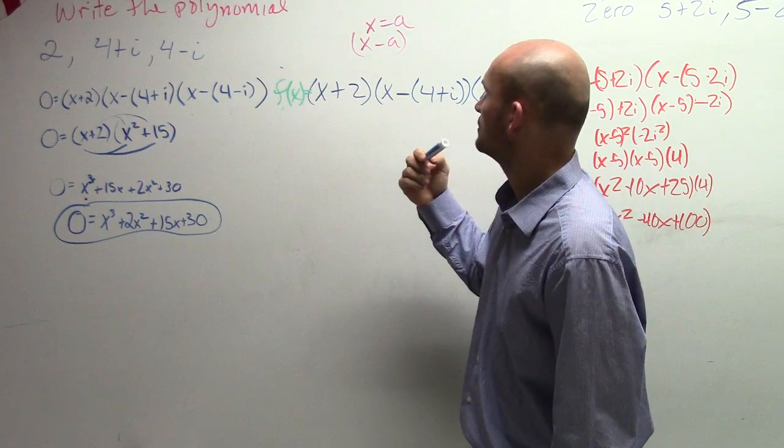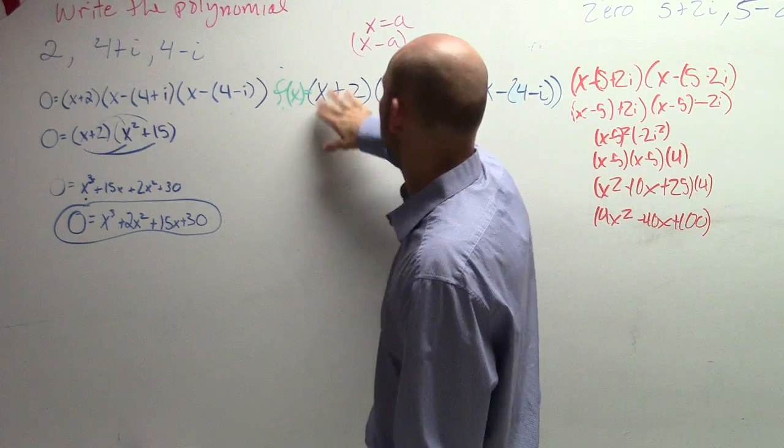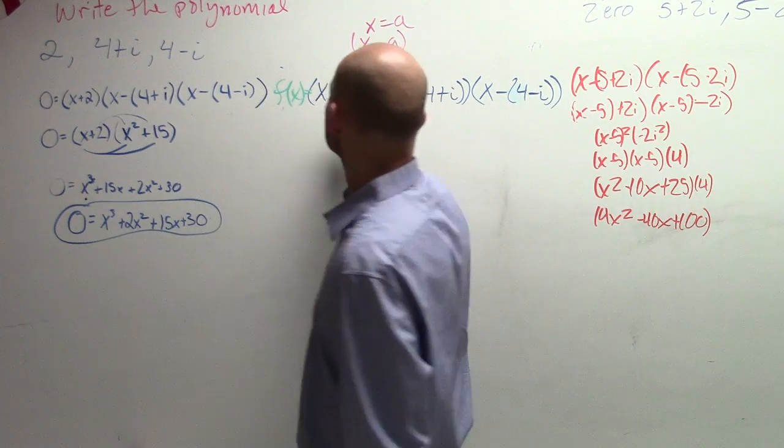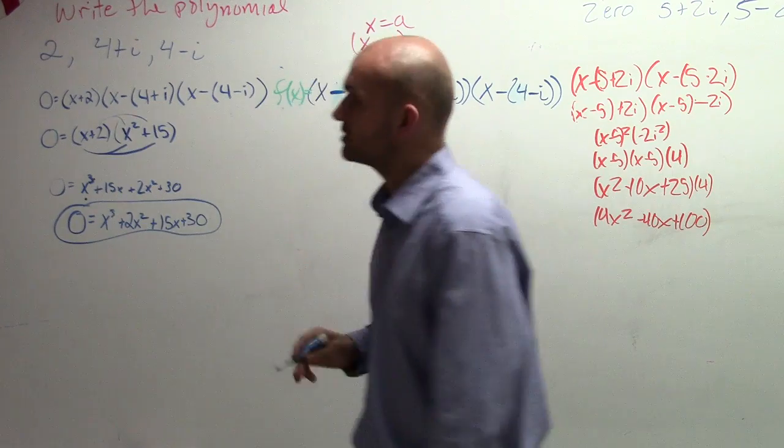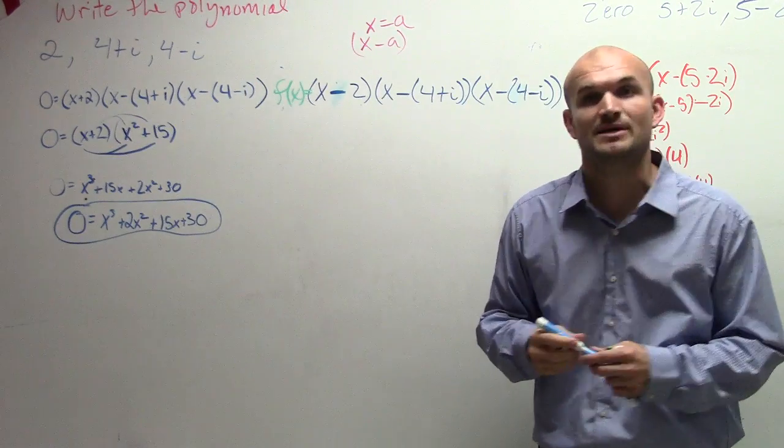That's what you just said. I just said that. Oh, from here. Yes. X minus 2. Thank you. Since the zero is positive 2, it would be x minus 2.